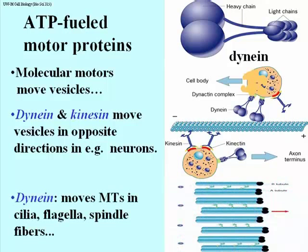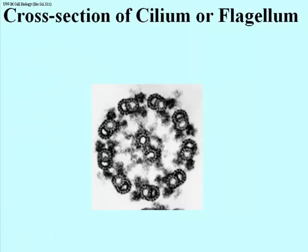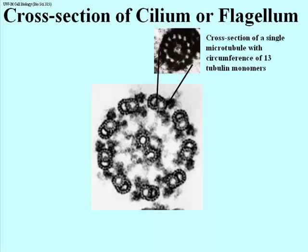Dynein is also attached to microtubules in cilia and flagella, and also in spindle fibers of mitosing cells, where they allow one microtubule complex to slide along another. Here is a cross-section of a cilium or flagellum — in eukaryotes, cilia and flagella show the same cross-sectional structure of microtubules. Here is our cross-section of a single microtubule with its 13 tubulin monomers as an inset, showing that in the cross-section of a cilium or flagellum there are many microtubules.